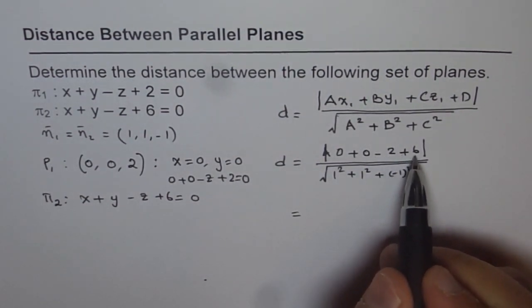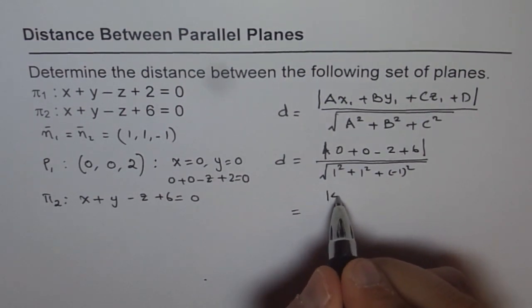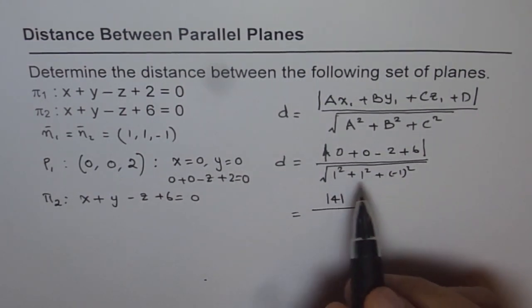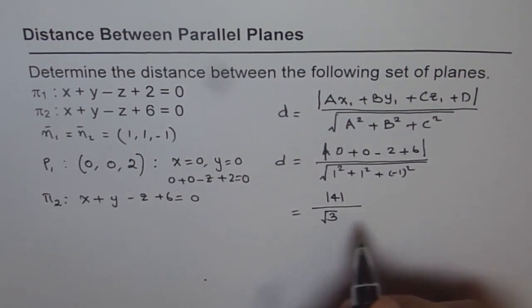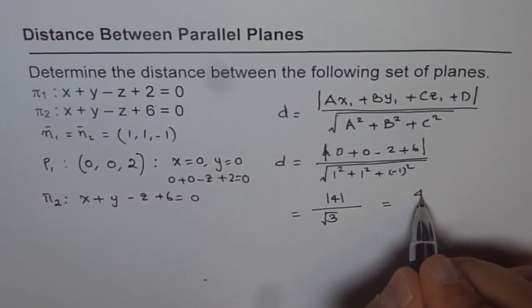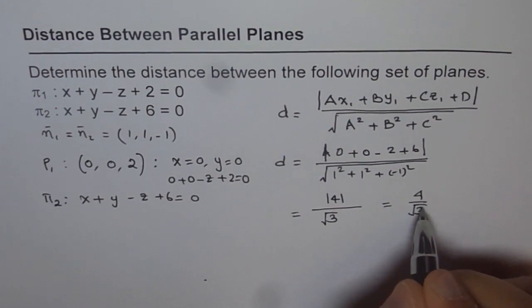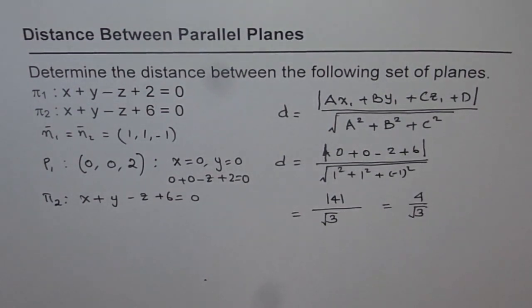Which is 1 squared plus 1 squared plus minus 1 squared square root. If you solve this, minus 2 plus 6 is absolute 4, and in the denominator, 1 plus 1 plus 1, which is square root of 3. So the answer is 4 over square root 3. That is the distance between the given planes.